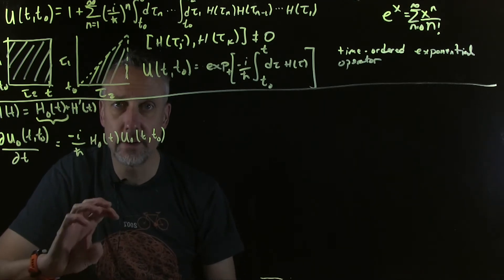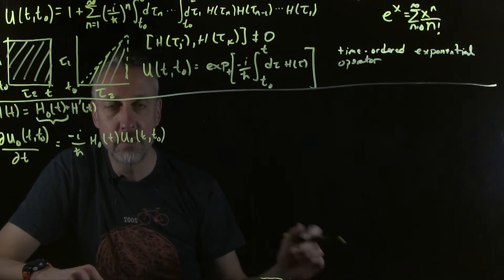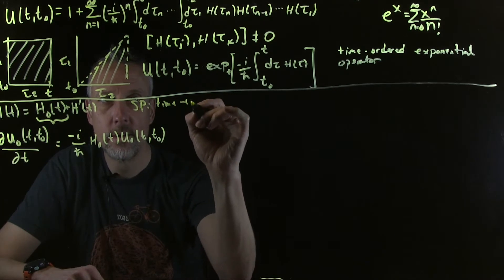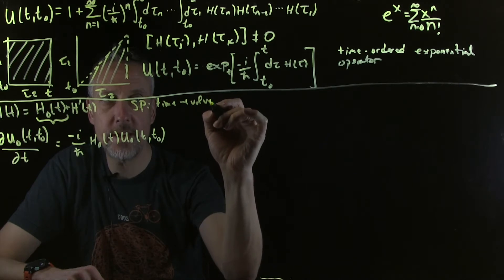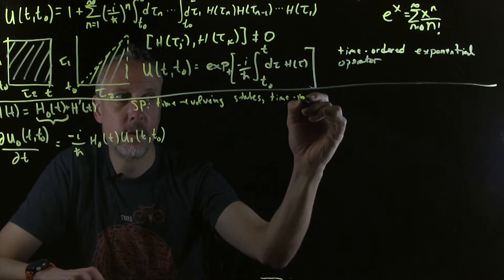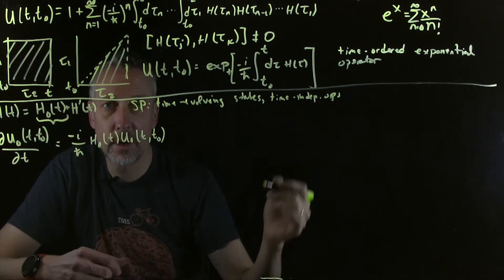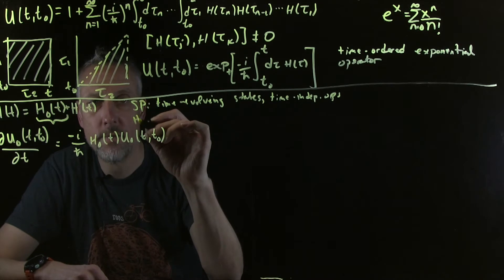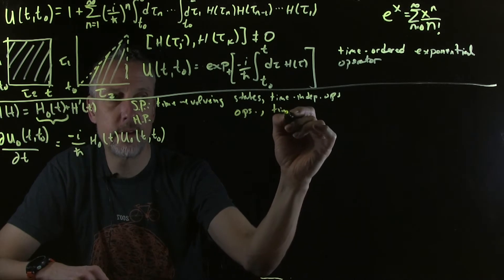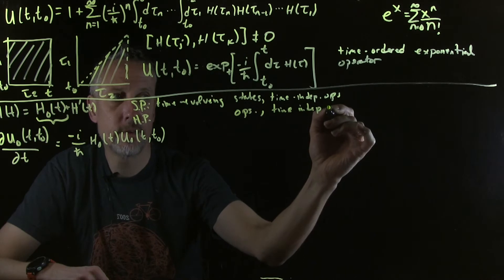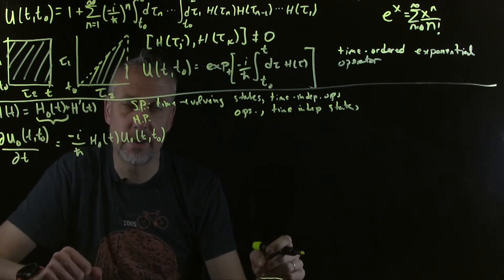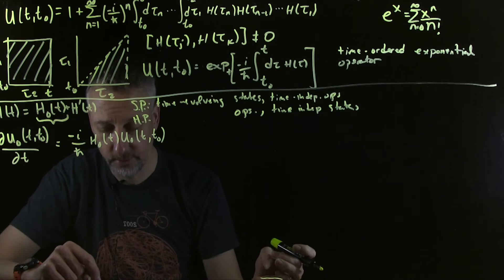The next thing we're going to do is define an intermediate picture. Remember, the Schrödinger picture has time-evolving states and nominally time-independent operators — though of course an operator could be an oscillating field and then it would also have time evolution. The Heisenberg picture has time-evolving operators and time-independent states. We arrive at this by writing an expectation value of an operator and realizing we can put the parentheses in different spots — that's what gave us the two different pictures.